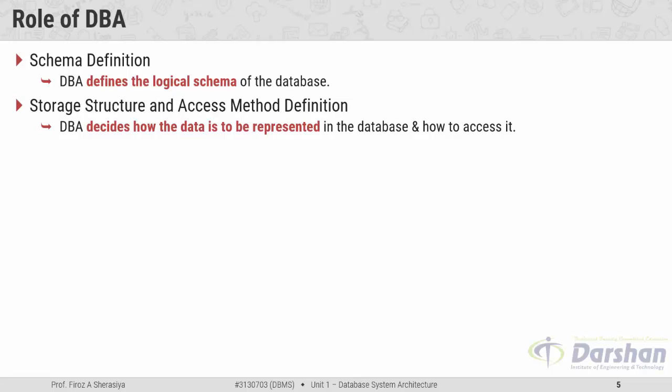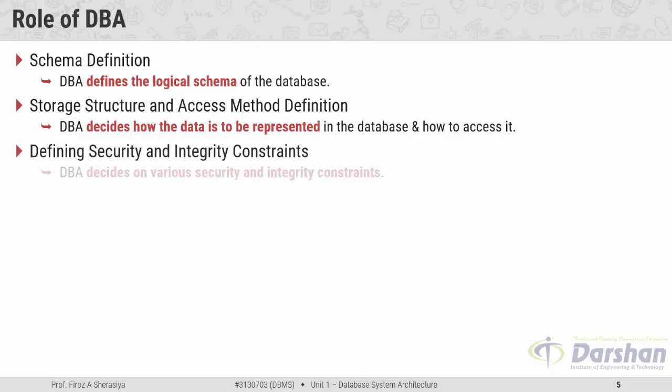The third role is defining security and integrity constraints. The DBA will decide on various security and integrity constraints. For example, if the database should not be accessed by persons outside the organization, that type of security is implemented by the DBA. For integrity constraints, for example a mobile number must contain 10 digits — until the person enters 10 digits they cannot proceed further. These types of integrity constraints are implemented by the DBA.